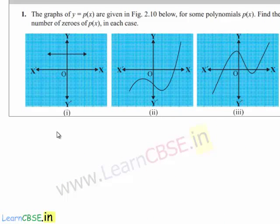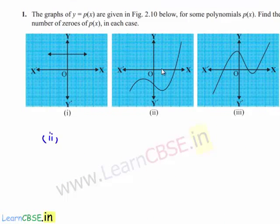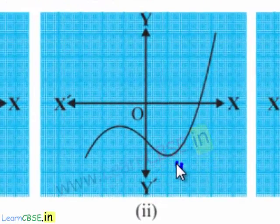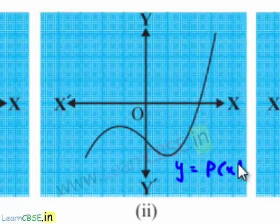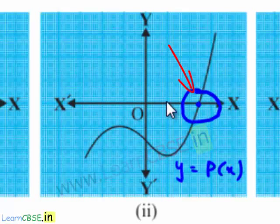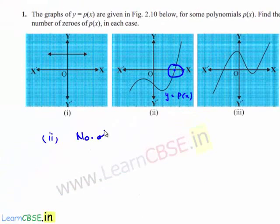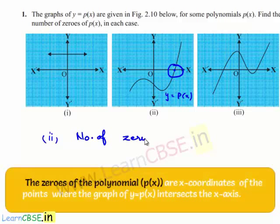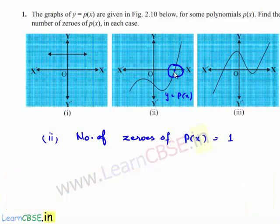Coming to the second case, the graph y equal to p of x intersects the x-axis at one point. Therefore, the number of zeros of p of x in the second case is equal to one, because the graph is intersecting the x-axis at one point.